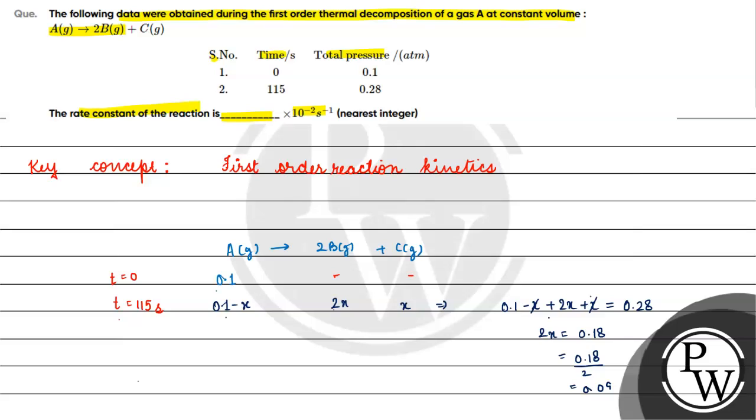The rate constant k = 2.303/t × log₁₀(P₀/P). We know t = 115 seconds, initial pressure P₀ = 0.1, and pressure of A remaining is 0.1 - 0.09 = 0.01.